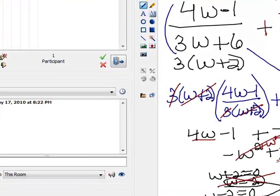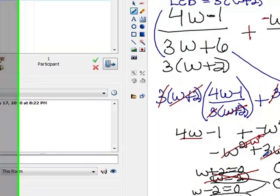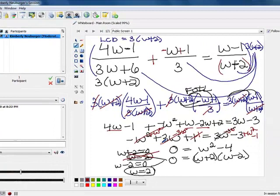which makes the only possible solution 2. If you get to the end, and all the solutions that you come up with end up being extraneous solutions, then what you would just state is that there's no solutions to the particular problem because sometimes that happens. If negative 2 had been the only answer and it does make the denominator 0, then we would just say no solutions. In this case, we had 2, 1 worked, 1 didn't.